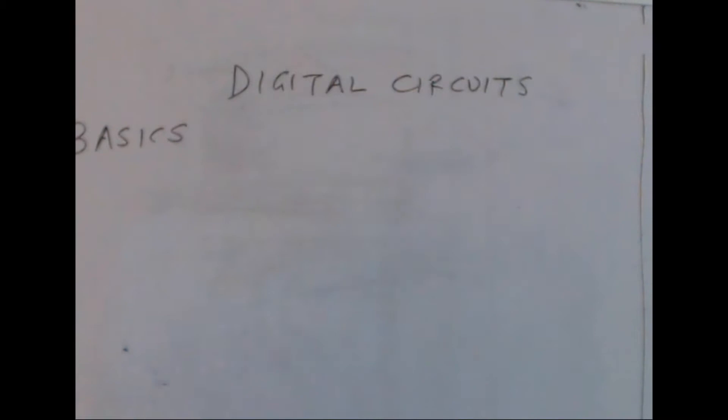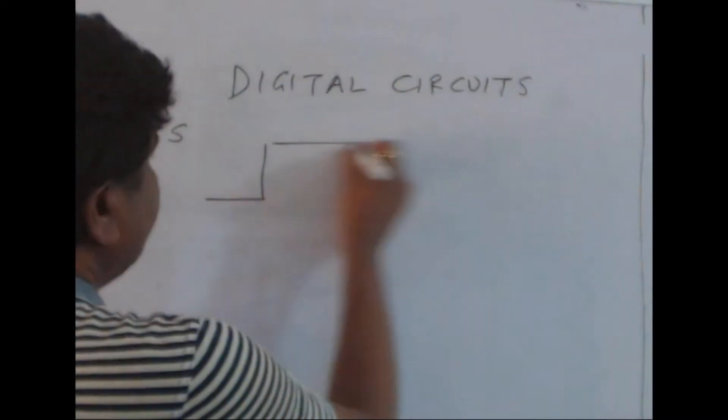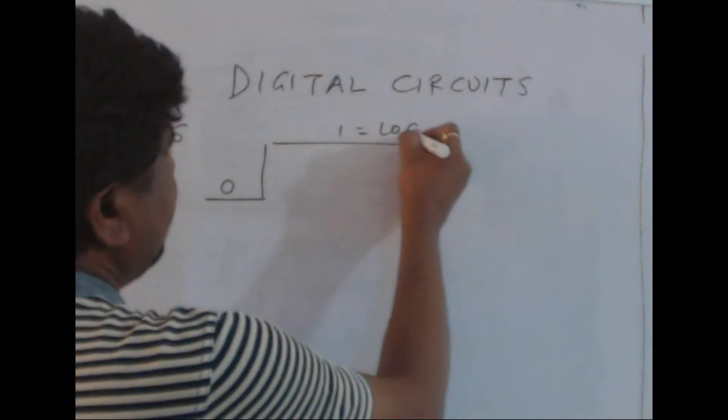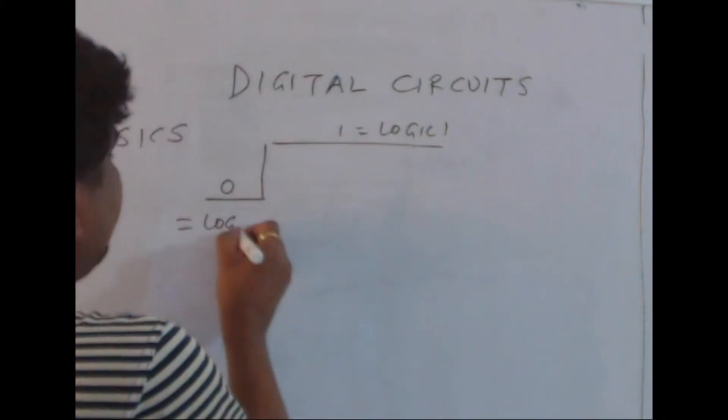We know that digital means we have two values: 0 and 1. This is logic 1, this is logic 0.